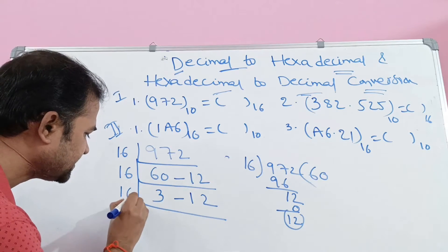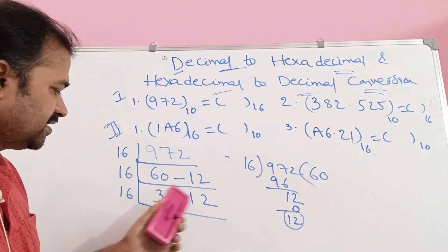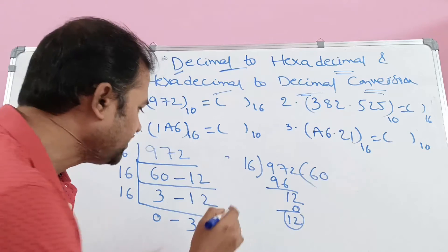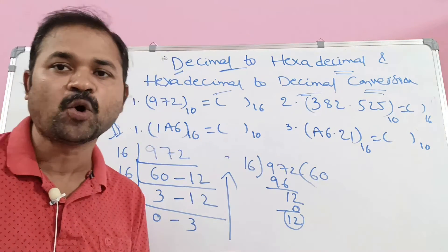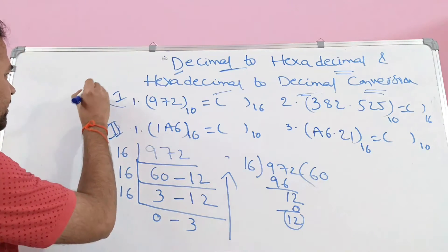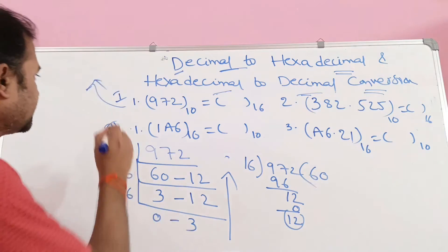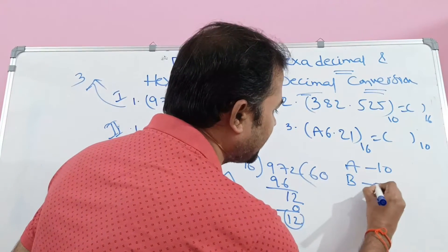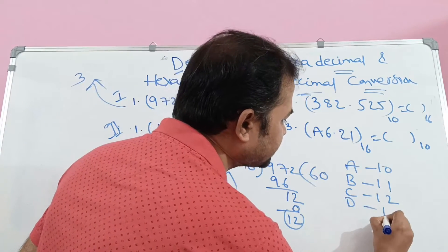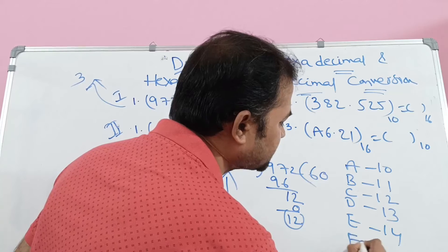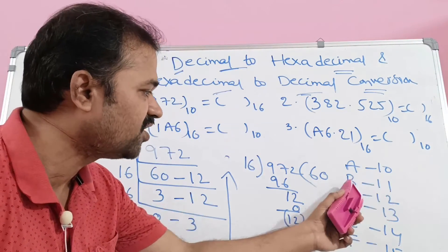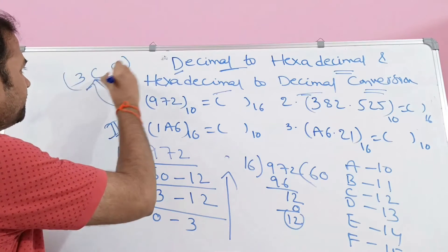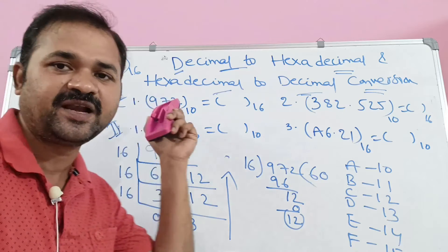Continuing: 3 divided by 16 gives quotient 0 and remainder 3. So we stop the process and write the result from bottom to top. Reading bottom to top: 3, then 12, then 12. Since 12 in hexadecimal means C, the answer is 3CC base 16. That is the corresponding hexadecimal number for 972.